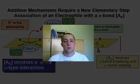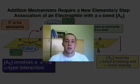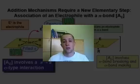With this new elementary step in place, and your understanding that addition of an electrophile to an alkene involves an A sub E step, we can begin to understand how this addition of an electrophile to an alkene actually occurs.